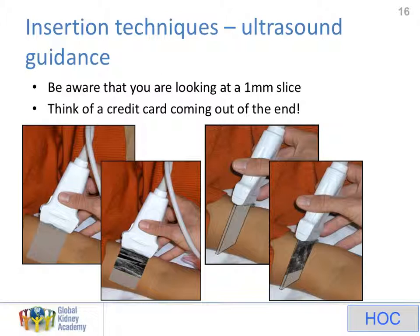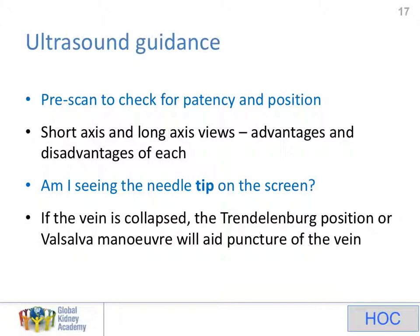Ultrasound — what I want to show you with this slide is about how the beam of the ultrasound looks. The left two images at the bottom are a longitudinal cut through a vessel and the right two are a cross-sectional short axis view. What comes out of the ultrasound probe is a beam which is about one millimetre in thickness. That's very important because when you're looking at the needle tip, all that you see is where that needle tip transects that ultrasound beam, and that isn't necessarily where the tip of the needle is. That can lead to confusion. So if you've got ultrasound, you should always pre-scan — it shows you that the vein is patent and tells you something about the position of that vein.